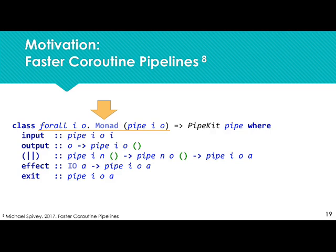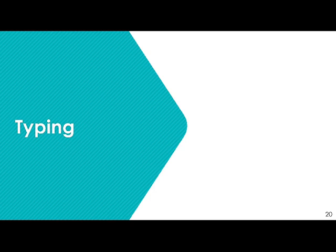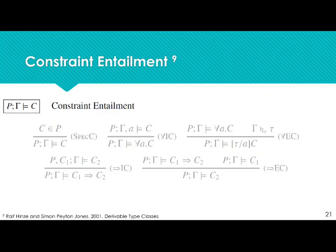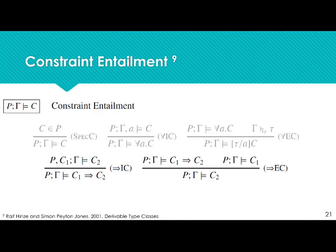The main difference in our typing specification is the specification of constraint entailment. We represent constraint entailment as taking a program theory P — containing all the logical formulas — a typing context gamma, and a wanted constraint C, which we entail using five rules. A constraint can either be in the program theory, in which case we entail it immediately; we introduce introduction and elimination rules for type abstraction; and we do the same for constraint application. These rules are the standard rules for a subset of first-order logic called Horn formulas.